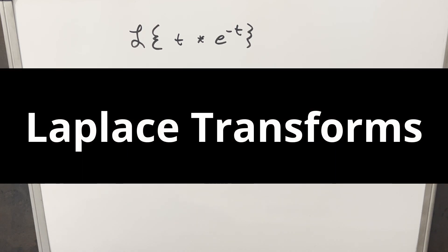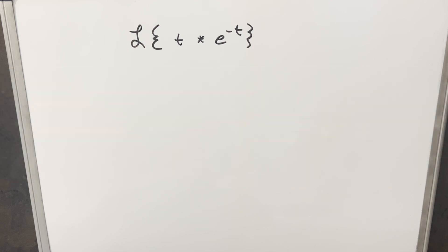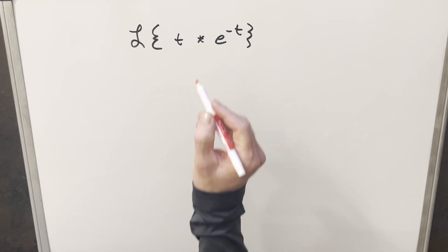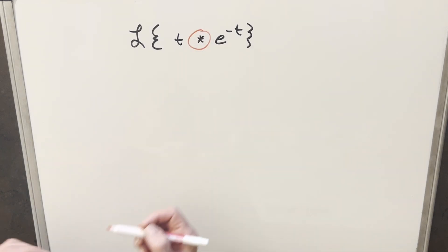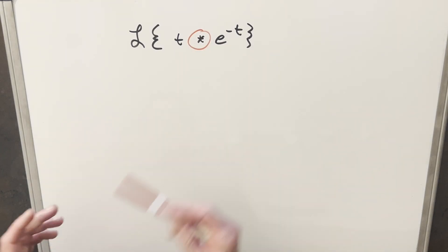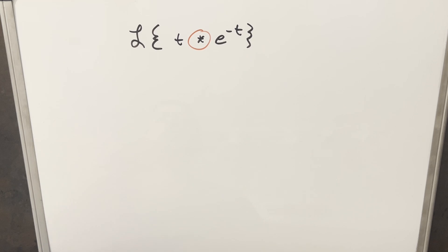Continuing on today with our Laplace transform playlist. We have here the Laplace transform of the convolution of t and e to the minus t. To get started, the first thing I need to bring up is this convolution symbol. This is not multiplication, so this is not the same as t times e to the minus t. The convolution comes up a lot with Laplace transforms because we have a really nice and useful formula for it. I want to show this works through a relatively simple example.